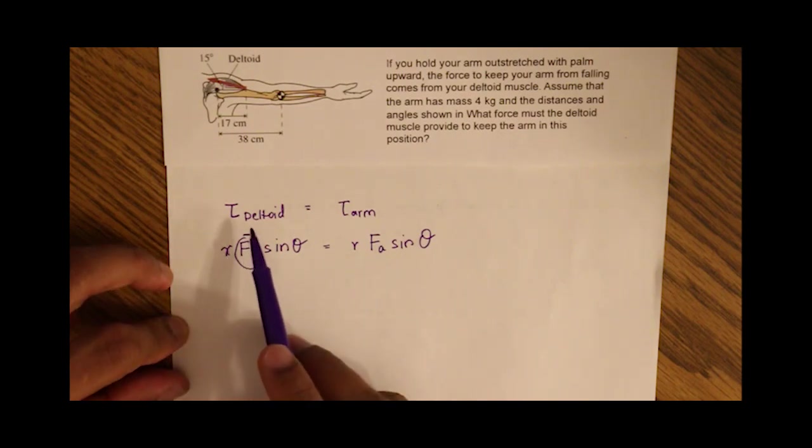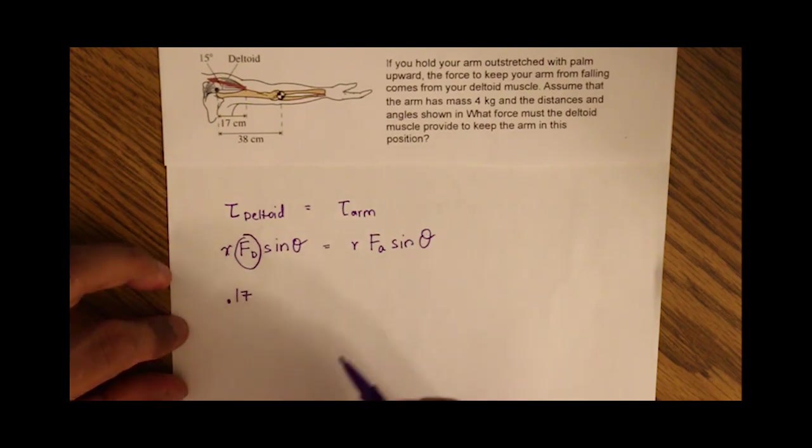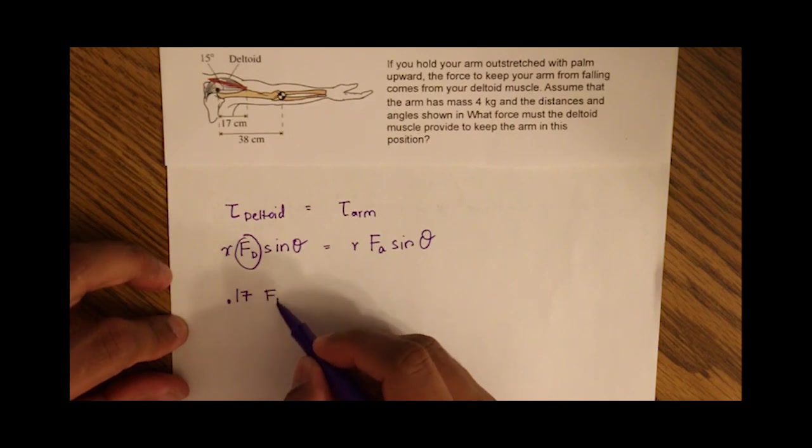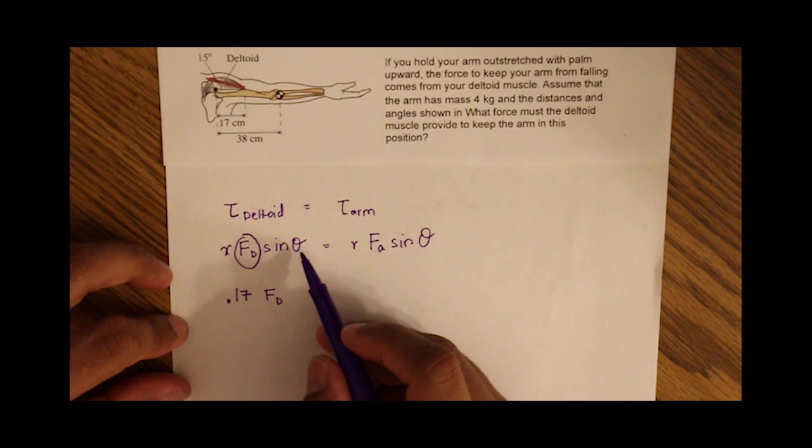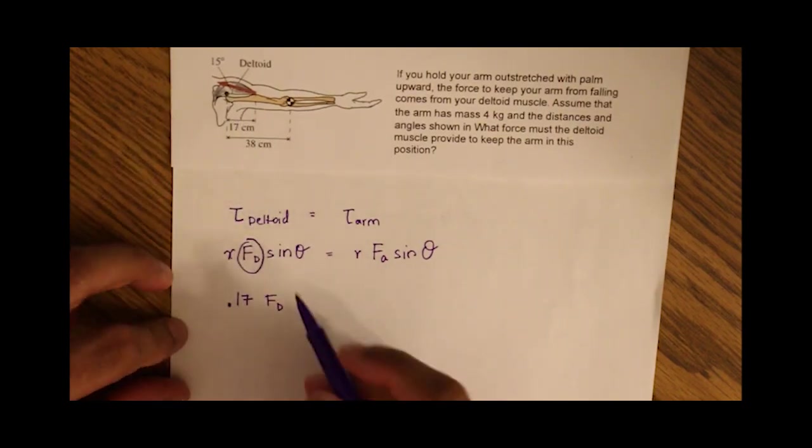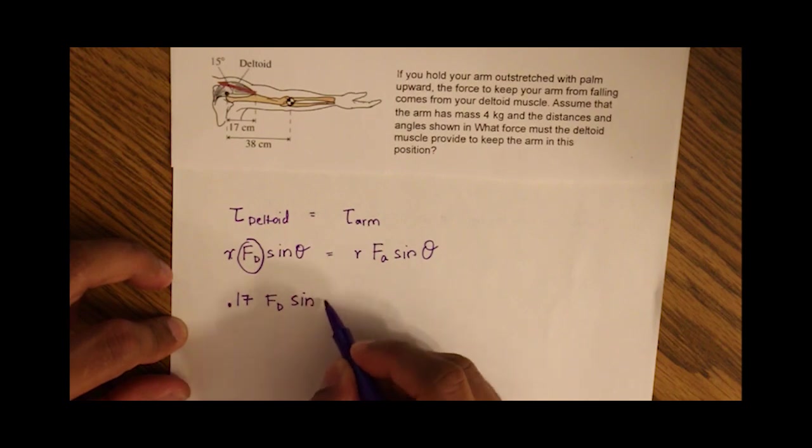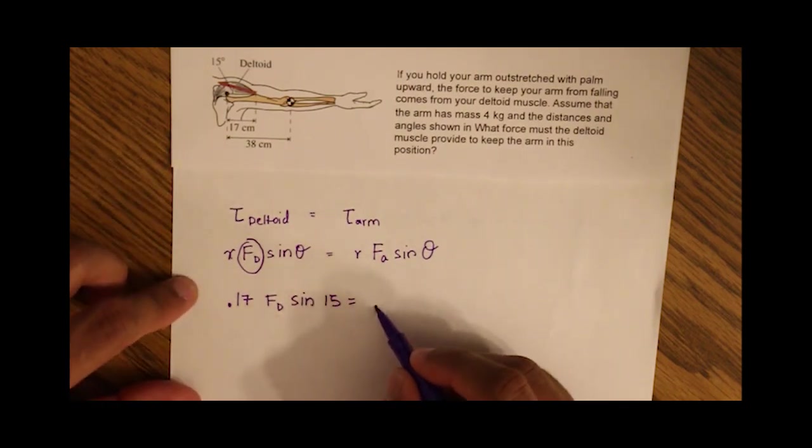The radius for the deltoid is given to us as 0.17 meters, or 17 centimeters. F of deltoid, and the sine of the angle of the deltoid muscle is 15 degrees. That's given to us in the problem. So sine of 15.